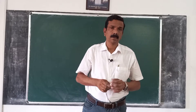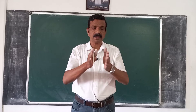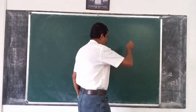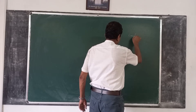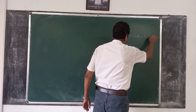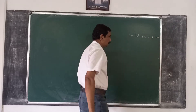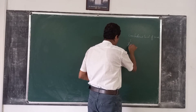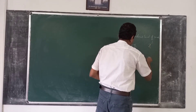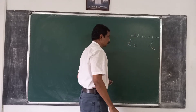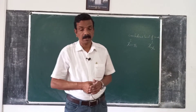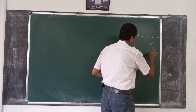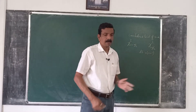Now let us see what are the steps in the construction of a confidence interval for one population standard deviation. The first step is: for a confidence level of one minus alpha, from the table find out chi-square (1 minus alpha/2) and chi-square (alpha/2) with degrees of freedom equal to n minus 1.